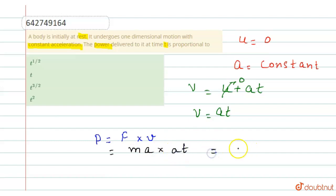So, we get m a square t in which mass and acceleration both are constant. So, power delivered is proportional to t.